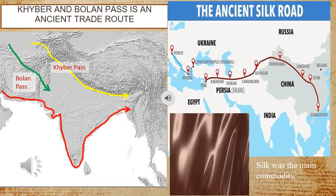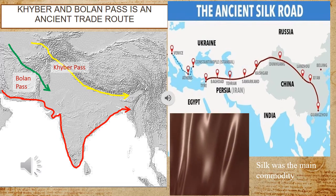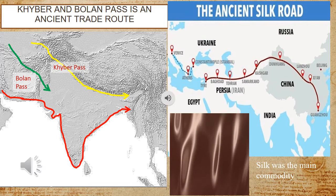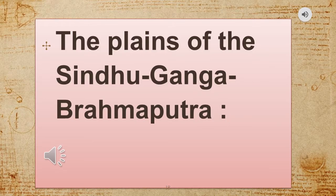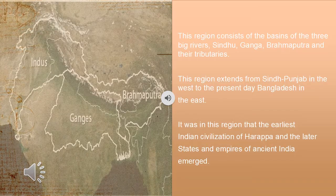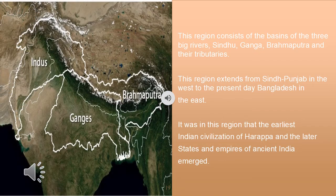The plains of the Sindhu-Ganga-Brahmaputra region consists of the basins of the three big rivers — Sindhu, Ganga, Brahmaputra — and their tributaries. This region extends from Sindh and Punjab in the west to present-day Bangladesh in the east. It was in this region that the earliest Indian civilization of Harappa and the later states and empires of ancient India emerged.